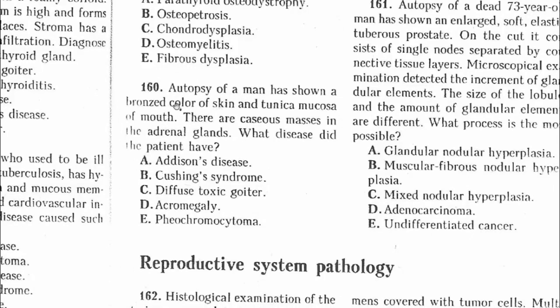Question 160: Autopsy of a man has shown a bronze color of skin — another name for hypermelanosis — and in the tunica mucosa of the mouth there are acaceous masses. Changes were found in the adrenal glands. The disease is Addison's disease.